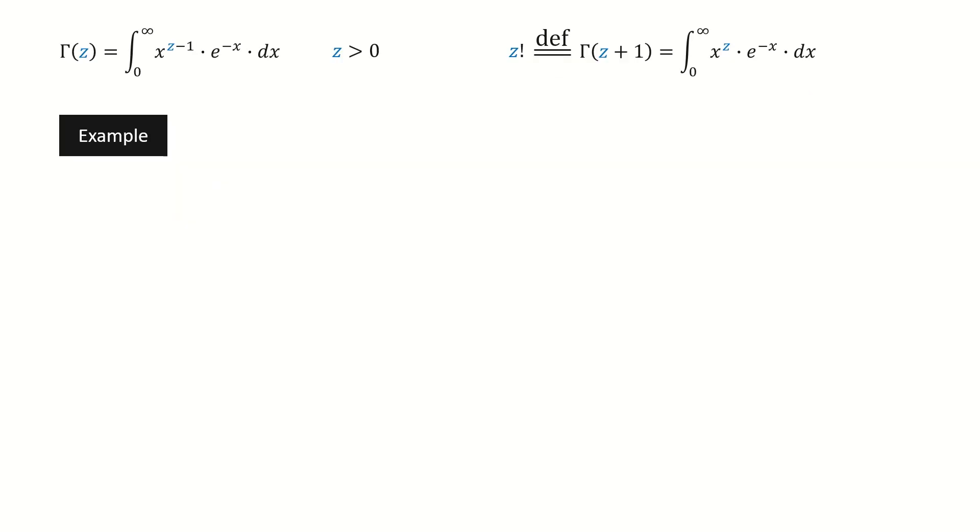Let's see an example. Suppose we want to compute 1.7 factorial. There are two ways to do it.